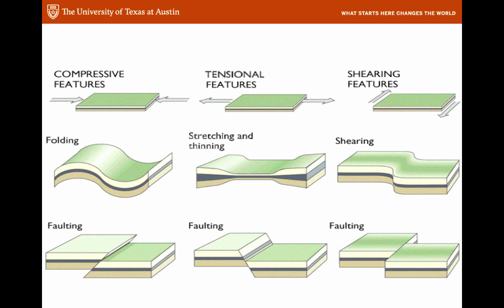Now maybe you came up with something that looks like this — compressive features, tensional features, and shearing features that you might see in rocks. When you compress something and it behaves ductilely, it will fold. When it behaves brittlely, it will break and form a fault where the rocks are squeezed together and one side is pushed up. When you pull something apart, the ductile behavior will be stretching and thinning, and the faulting will be stretching apart and dropping down. And when you provide a shearing stress, you can bend something in a horizontal plane or you can make a strike-slip kind of fault.